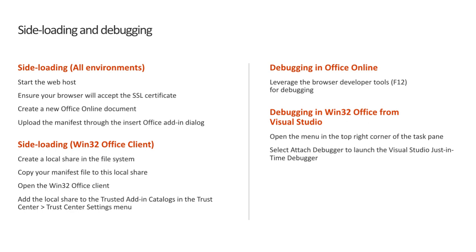For sideloading and debugging React apps, you have a couple of different options based on your developer environment. Office Online is available to all developer environments — it involves uploading an add-in XML manifest through a new Office document in Office Online via OneDrive. Debugging can be done with the browser's developer tools. For Windows users, you can also sideload the add-in by creating a local network share, place the add-in's XML manifest in that share, and then configure the Office clients to look for add-ins in that location via the trusted add-in catalog settings in Trust Center. Visual Studio users can even attach a debugger to task pane add-ins running the Win32 Office client.